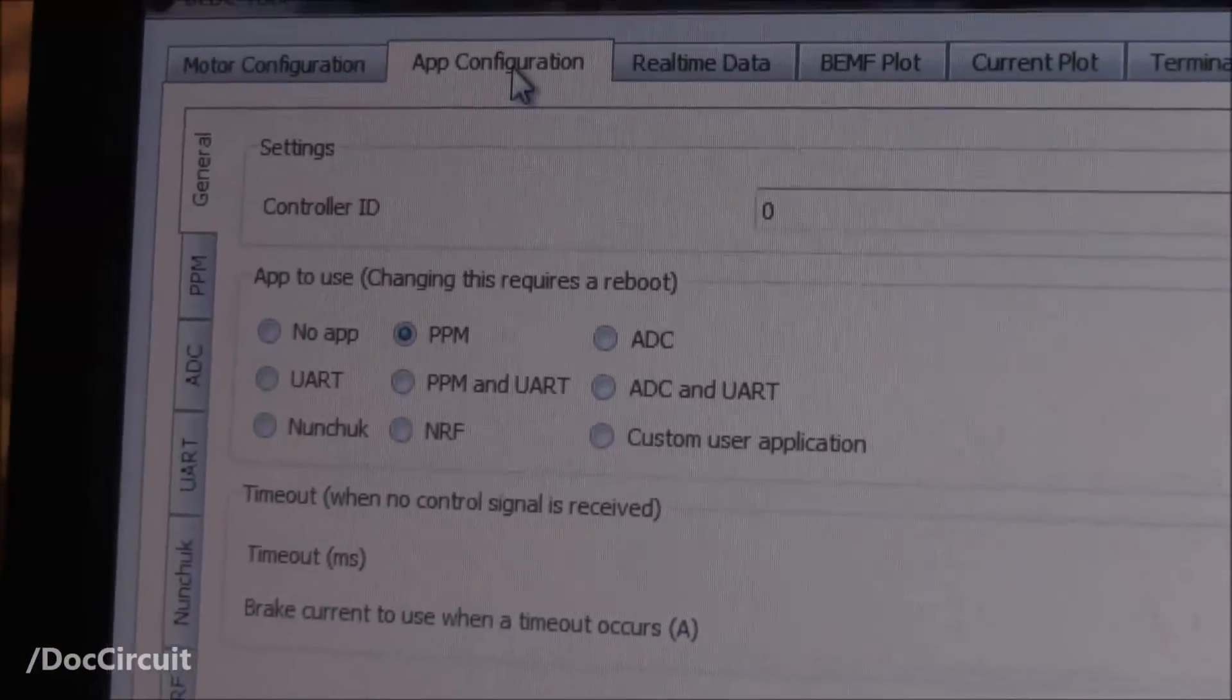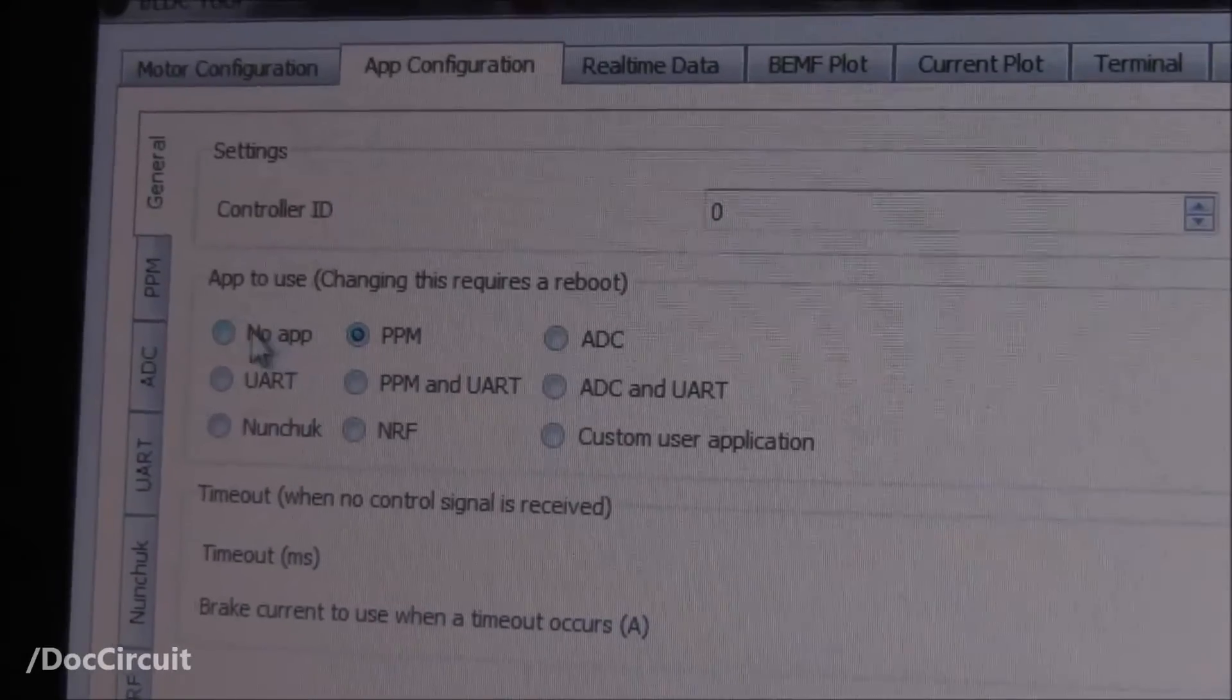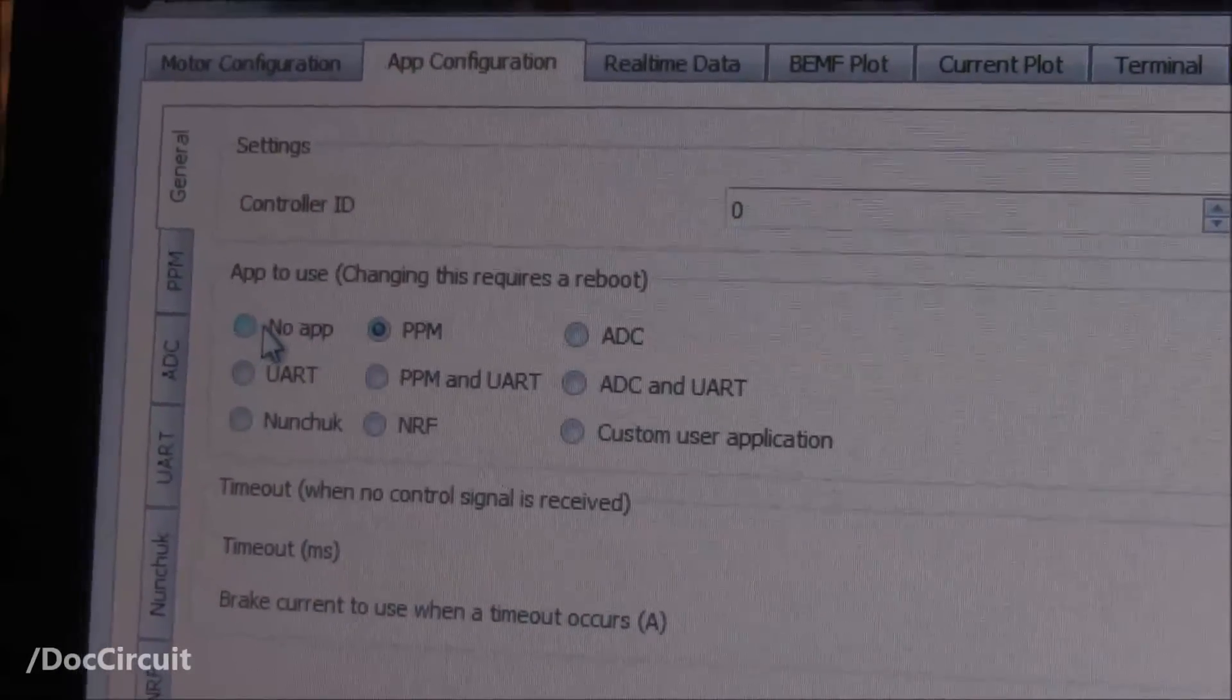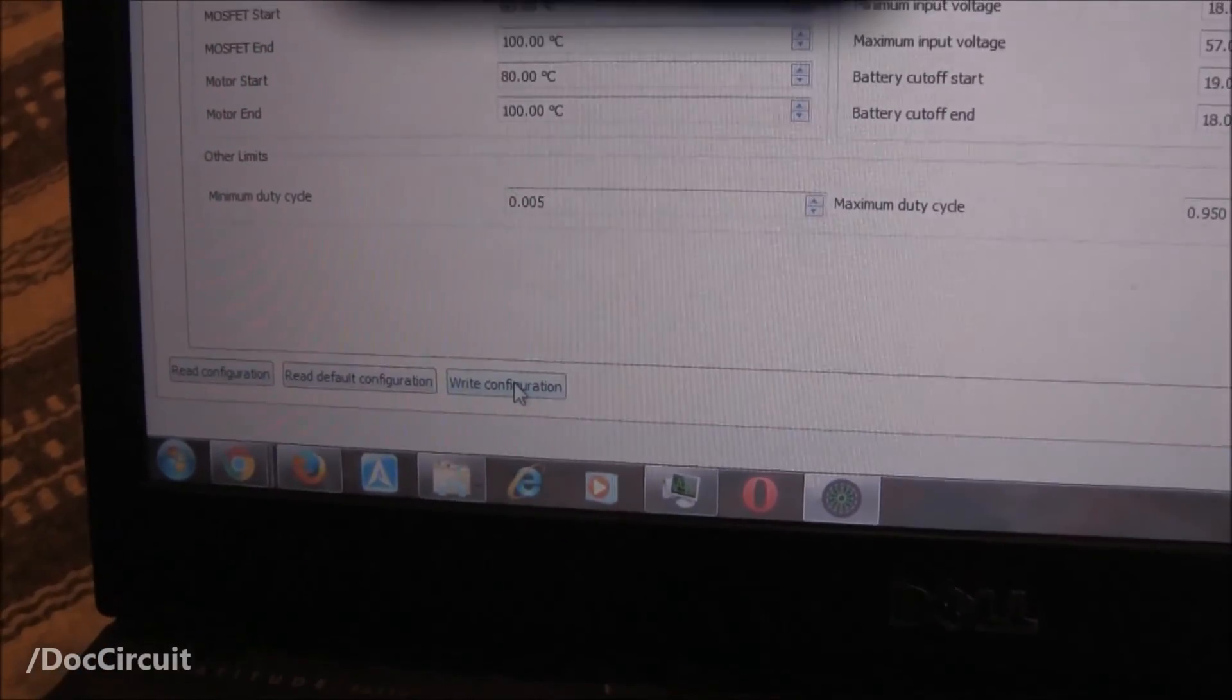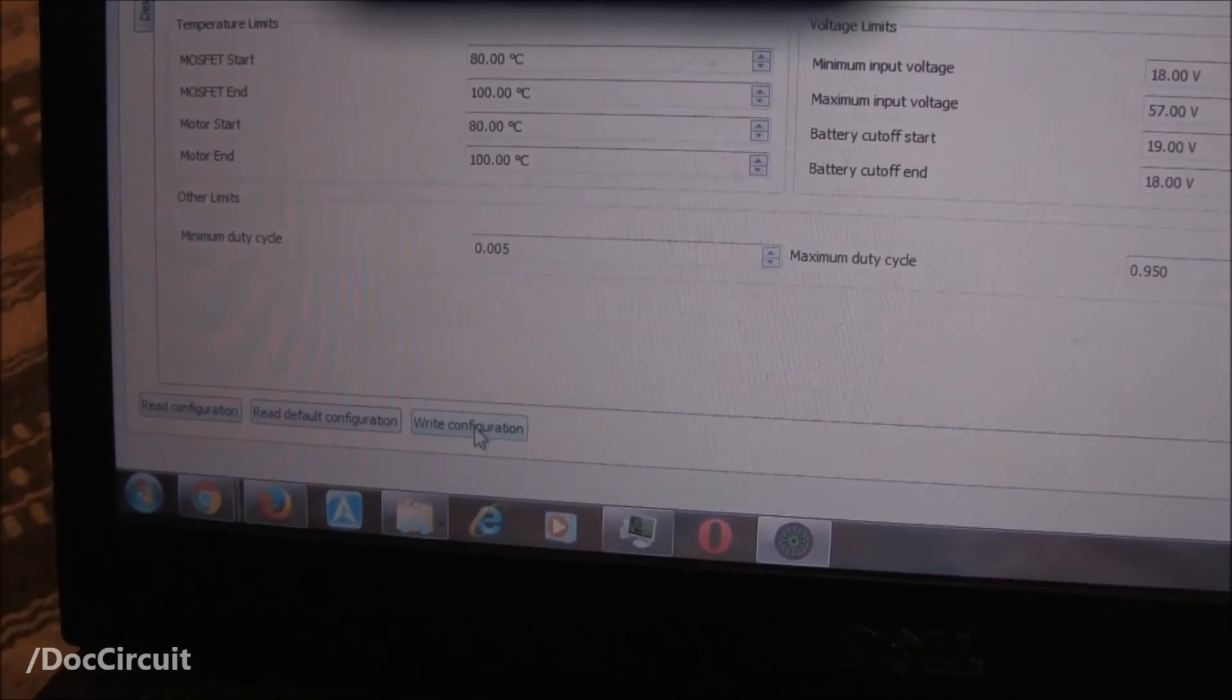App configuration. This is about the controller. This might be on no app when you're here. You want to choose PPM. And don't forget, after every change that you've made, click on write to force it through to the VESC.